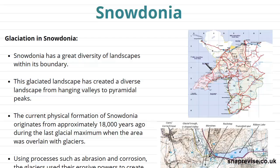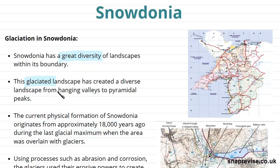Snowdonia has a great diversity of landscapes within its boundary, and this is because it was formerly a glaciated environment. The glaciated landscape created a diverse landscape with many glacial features, from hanging valleys to pyramidal peaks as well.